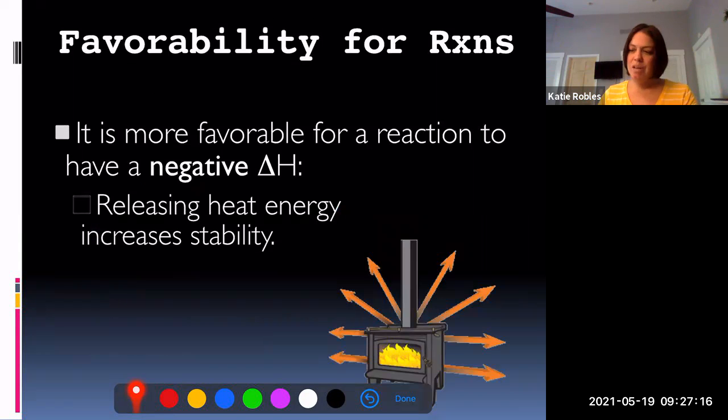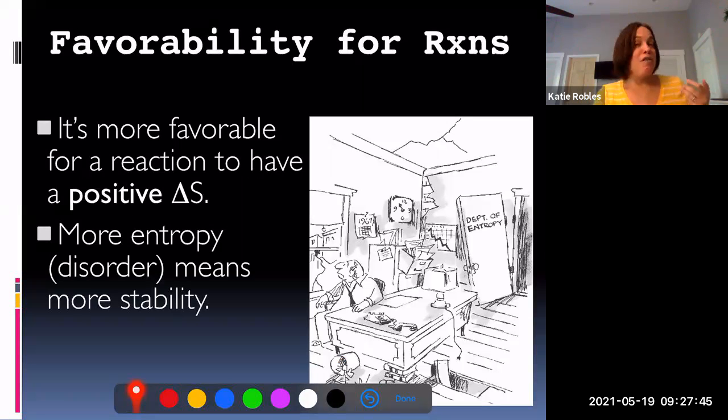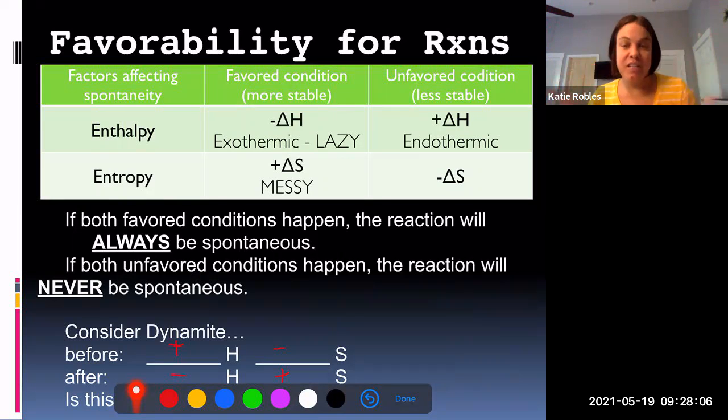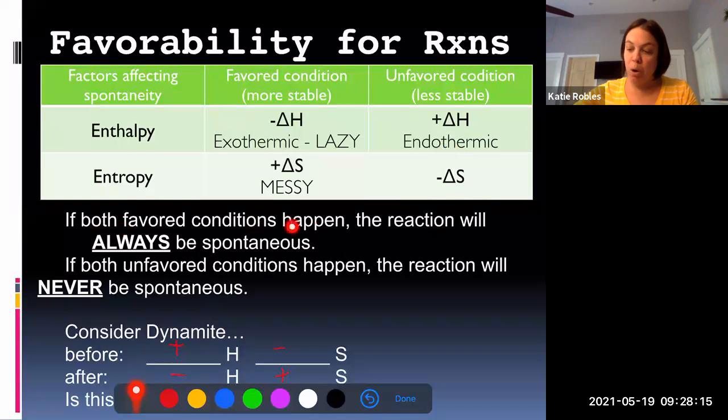So reactions are what we call favorable or not favorable. It is more favorable for a reaction to have a negative delta H, right? If we go downhill, right, and we release energy, what it does is it increases stability. Nature wants to run downhill, nature is lazy. It is more positive for you to have a positive delta S—that's entropy. More entropy or more disorder means more stability. So nature is lazy—it runs downhill—and nature is messy. All right, that's what it favors. It favors laziness and it favors messiness.